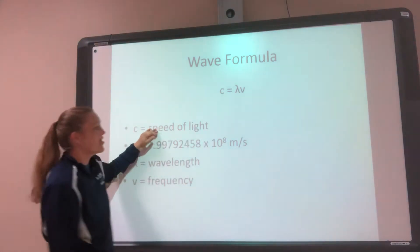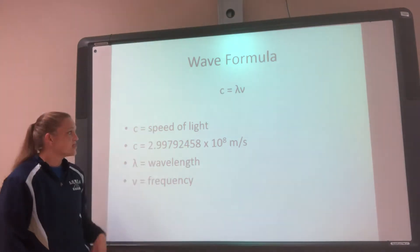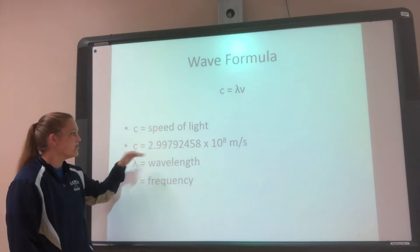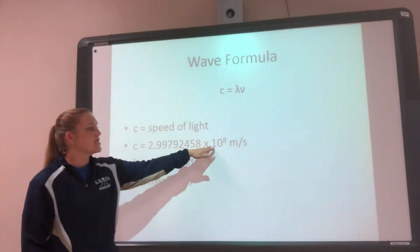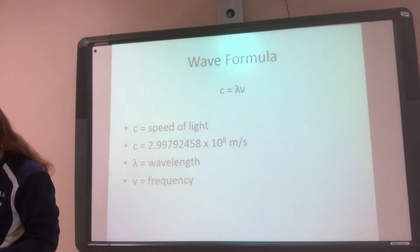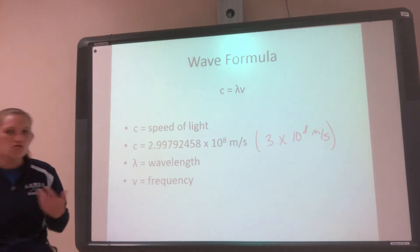So C is going to be my speed of light. My speed of light is a constant. It's in the back of your book, or you can use this value, 2.99 times 10 to the 8th. A lot of times when they do calculations, they'll just round up to 3 times 10 to the 8th meters per second. That's fine. Either one is fine.